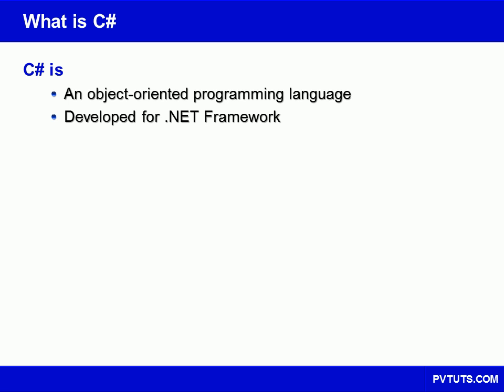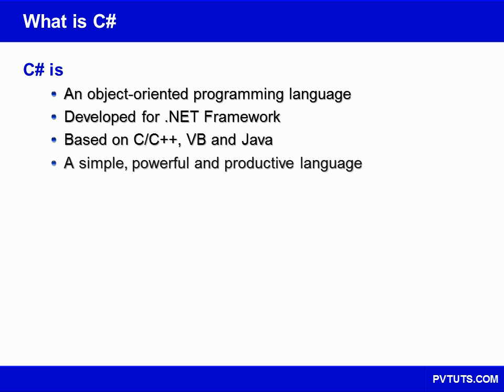C-sharp builds upon some of the best features of the major programming languages. It combines the power of C++ with the simplicity of Visual Basic, and also borrows much from Java. This results in a language that is easy to learn and use, robust against errors, and that enables rapid application development.